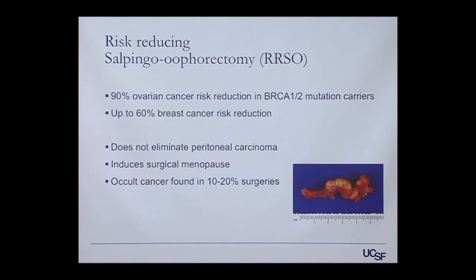Oral contraceptive pill use also appears effective in BRCA1 and BRCA2 mutation carriers — important for women not yet ready to have their ovaries and fallopian tubes removed. Risk-reducing salpingo-oophorectomy, or RRSO, is a bilateral salpingo-oophorectomy done in patients with hereditary risk for ovarian cancer. A bilateral salpingo-oophorectomy, or BSO, is a common gynecologic procedure done for various reasons, usually in postmenopausal women.